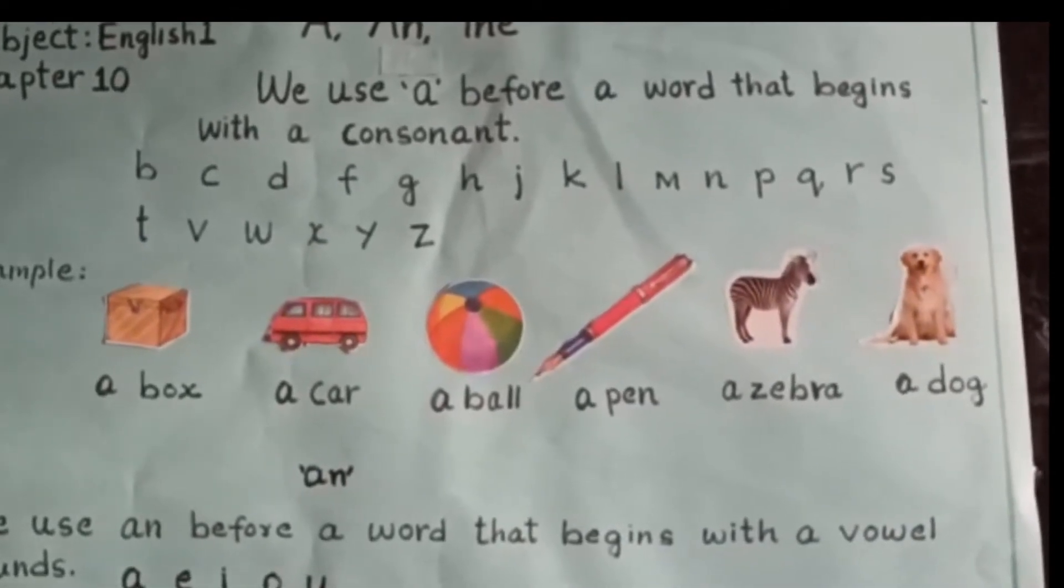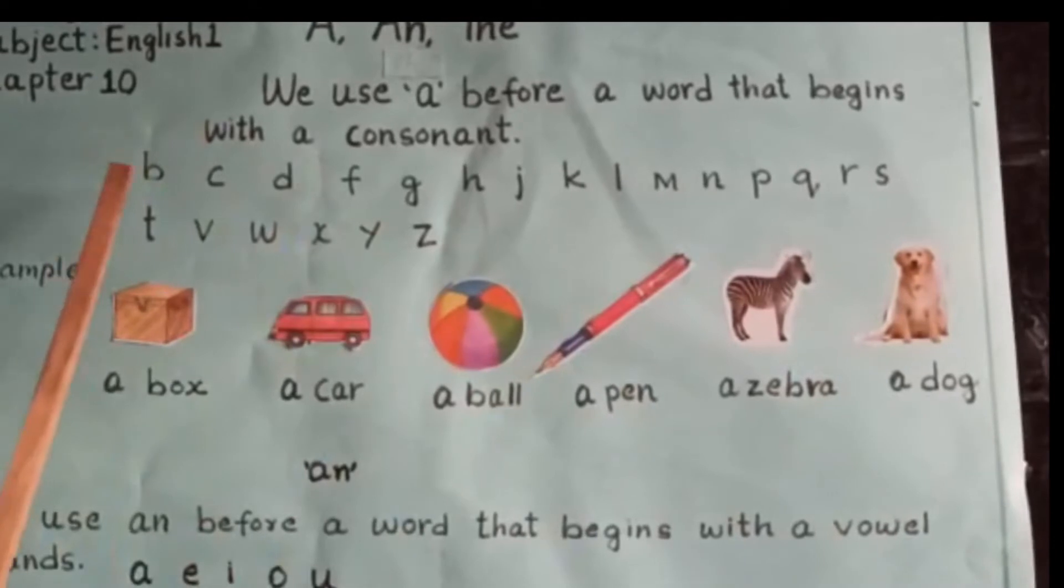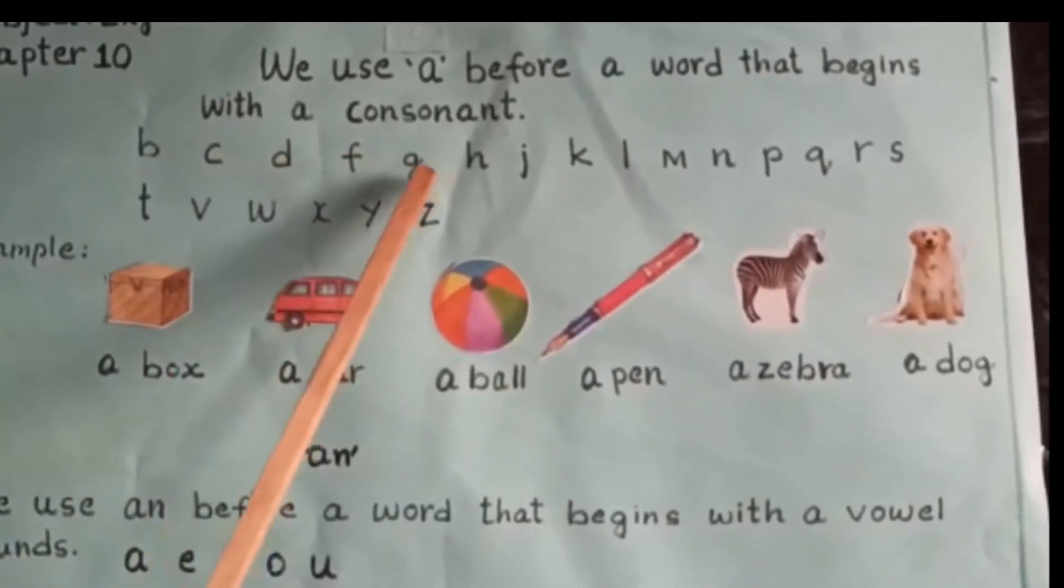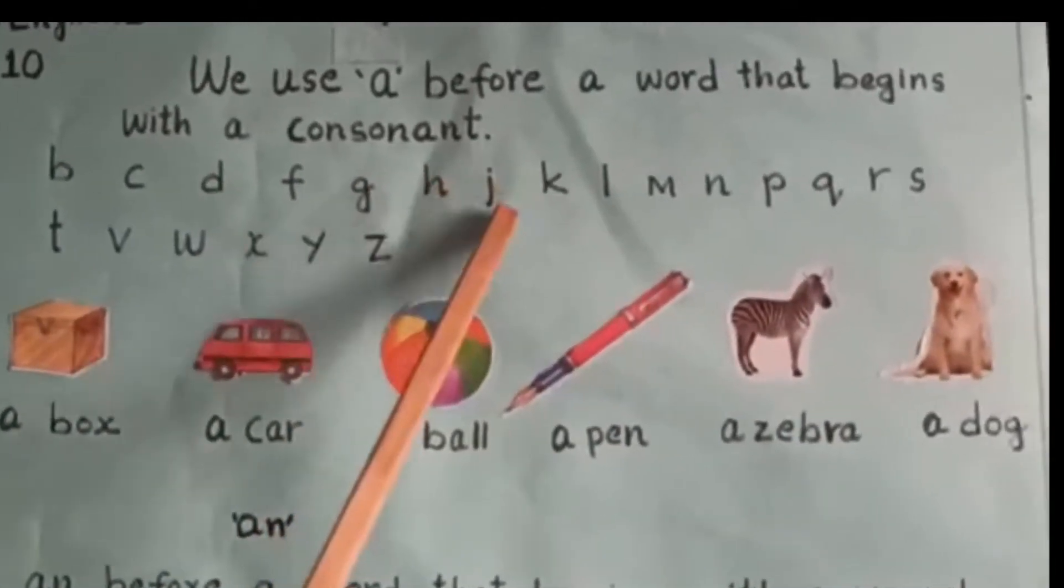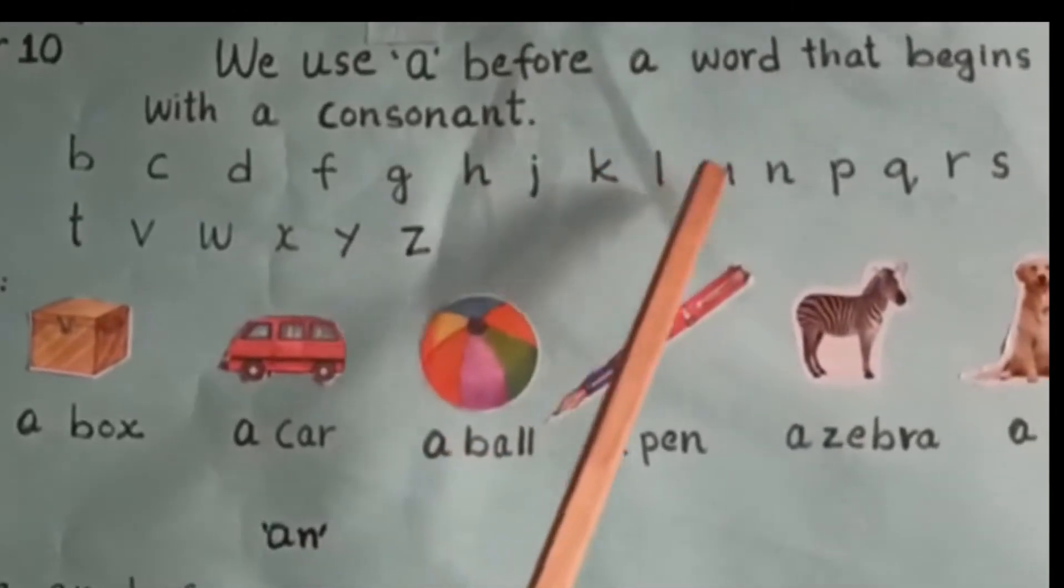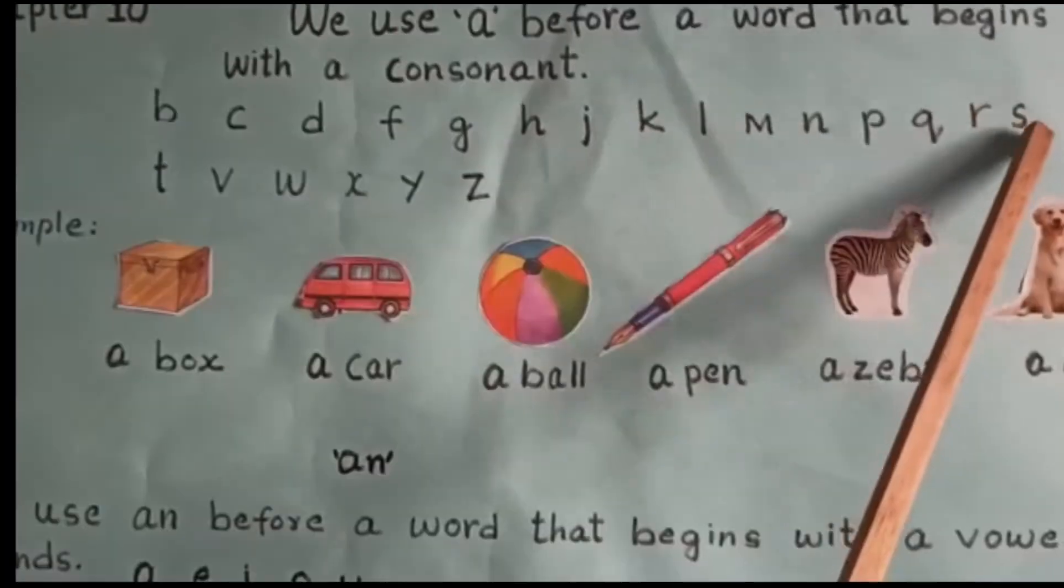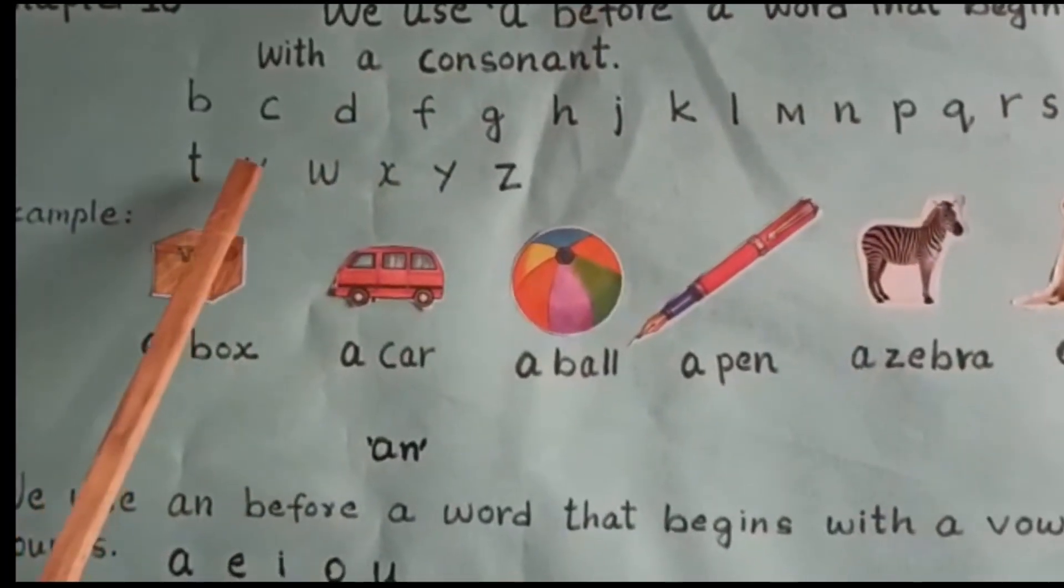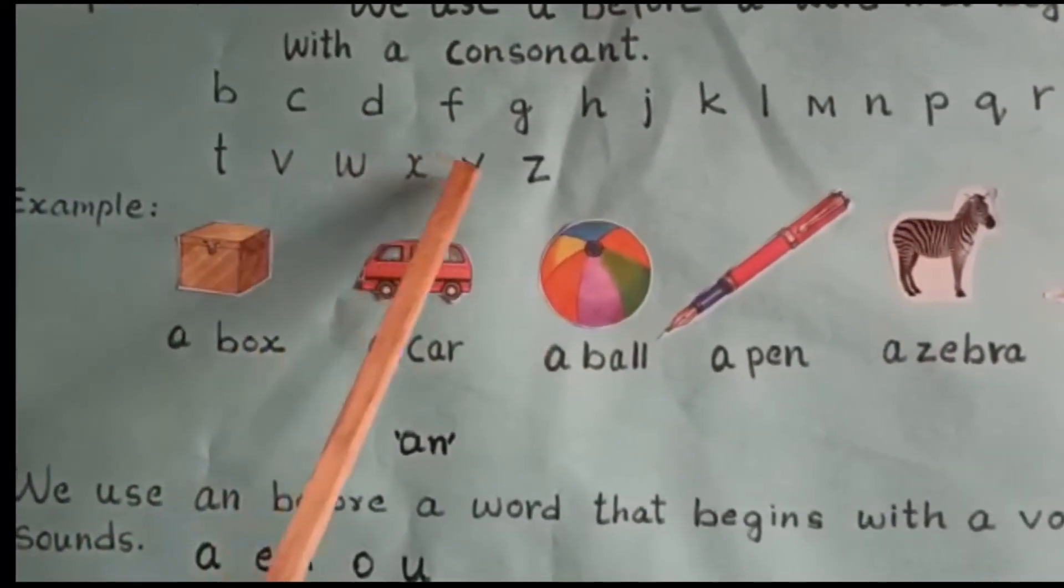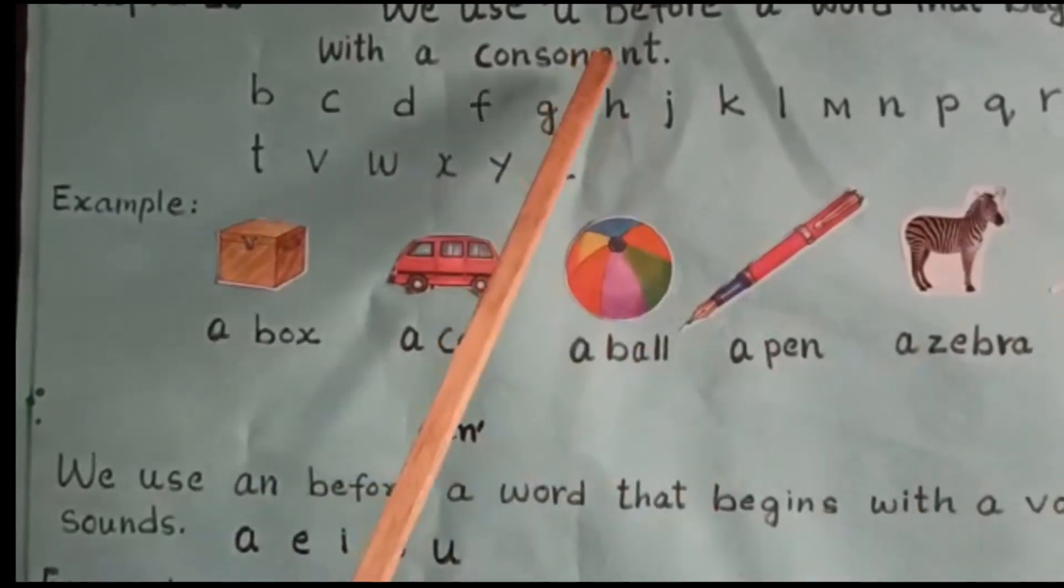The other 21 letters like B, C, D, F, G, H, J, K, L, M, N, P, Q, R, S, T, V, W, X, Y, Z are called consonants.